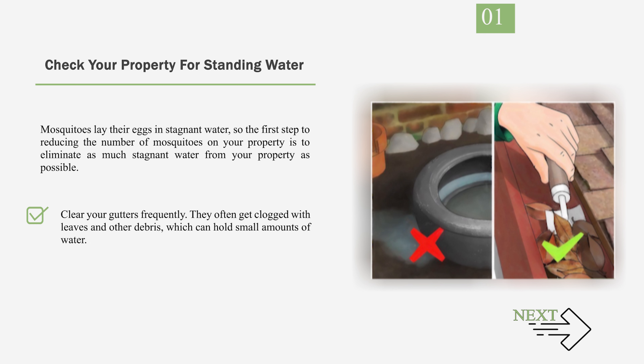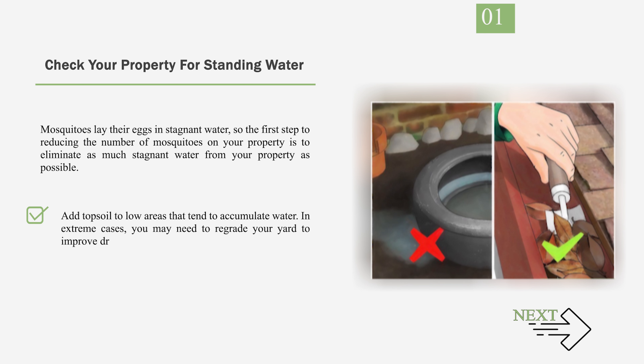Clear your gutters frequently — they often get clogged with leaves and other debris, which can hold small amounts of water. Even leaves on your lawn can provide enough water for mosquito larvae, so be sure to rake them up promptly. Add topsoil to low areas that tend to accumulate water. In extreme cases, you may need to regrade your yard to improve drainage.